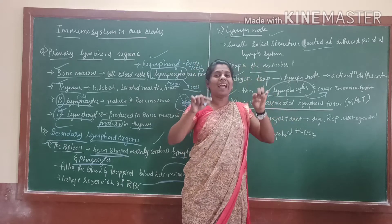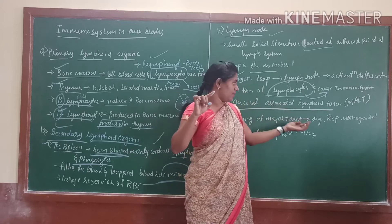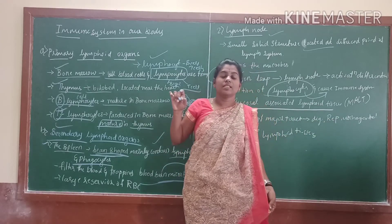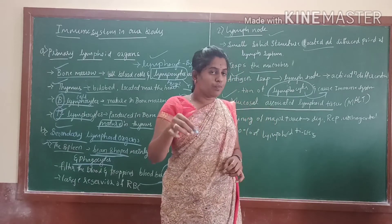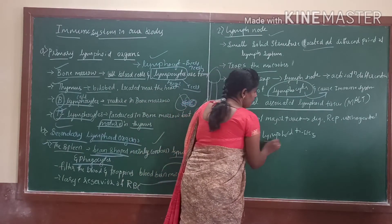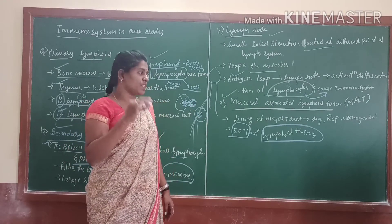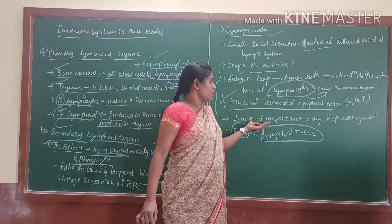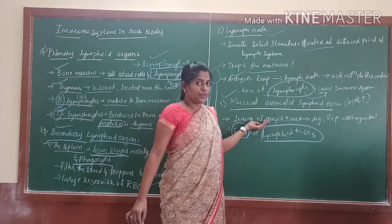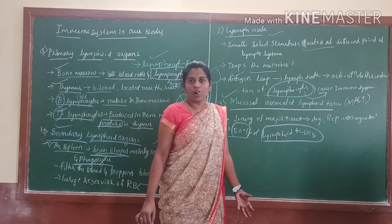Next you have the digestive tract, and also the urogenital system — the urine system and genital portion which are present. And also they consist of 50% of lymphoid tissues. These tissues are for secretion of mucus. Due to that mucus, they consist of acidic content, and due to that, they are able to easily kill the microbes.